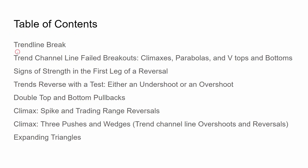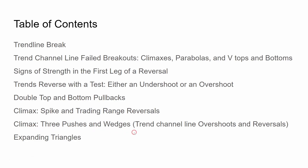Table of Contents: Trend Line Break, Trend Channel Line Failed Breakouts, Climaxes, Parabolas, and V-Tops and Bottoms. Signs of Strength in the First Leg of a Reversal. Trends Reverse with a Test — either an Undershoot or an Overshoot. Double Top and Bottom Pullbacks. Climax Spike and Trading Range Reversals. Climax, Three Pushes and Wedges. Trend Channel Line Overshoots and Reversals. Expanding Triangles.